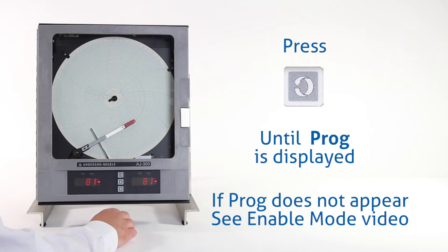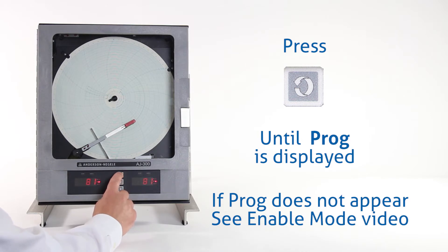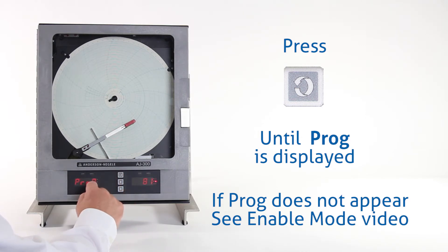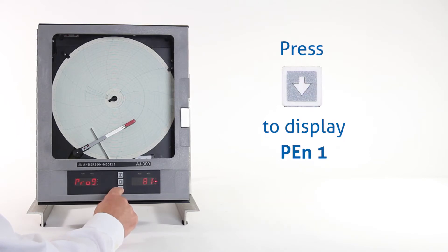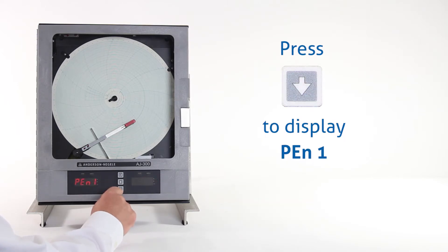To program the recorder, we first have to press the scroll key repeatedly until we see program appear on the left display. Once we have that, we'll press the down arrow key. We'll see pen 1, and we're going to do pen 1 first, so we press the down arrow key again.